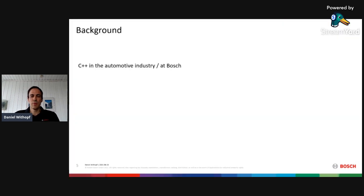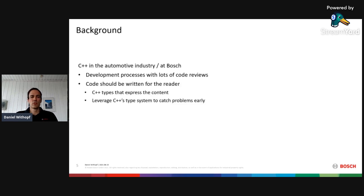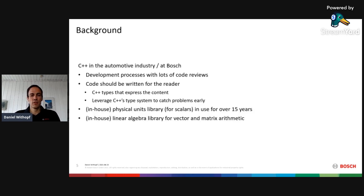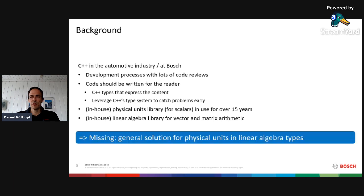I want to start with a little bit of background on C++ programming in the automotive industry at Bosch. In the automotive industry, there are lots of development processes which also include lots of code reviews. This means that the code should ideally be written for the reader. This can be achieved by using C++ types that express the content of each variable. Furthermore, it's good to leverage the C++ type system to catch problems as early as possible — at compile time. To achieve this, we have our in-house physical units library for scalars in use for over 15 years. Similarly, we have an in-house linear algebra library for vector and matrix arithmetics. But what has been missing until recently is a general solution for physical units in linear algebra types — there was no good way to combine physical units with linear algebra types.